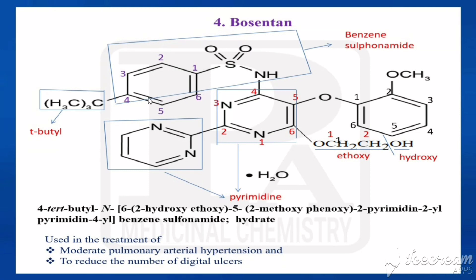The chemical name is: 4-tert-butyl-N-[6-(2-hydroxyethoxy)-5-(2-methoxyphenoxy)-[2,2'-bipyrimidin]-4-yl]benzenesulfonamide, available as a hydrate form. Bosentan is used in the treatment of moderate pulmonary arterial hypertension and to reduce the number of digital ulcers.